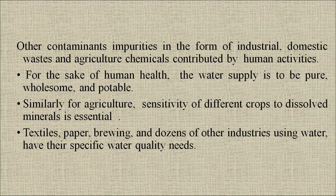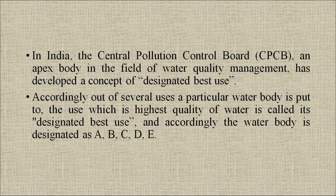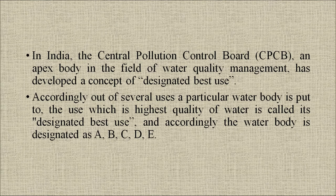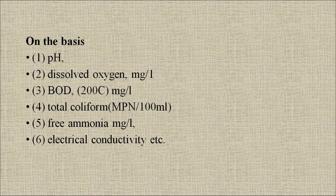Textile, paper, brewing and dozens of other industries using water have their specific water quality needs. In India, the Central Pollution Control Board (CPCB), an apex body in water quality management, has developed a concept of designated best use. Accordingly, out of several uses, the particular use requiring the highest quality of water is called its designated best use. Water bodies are accordingly designated as classes A, B, C, D and E on the basis of parameters such as pH, dissolved oxygen (mg/L), BOD, total coliform, free ammonia and electrical conductivity.